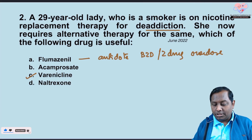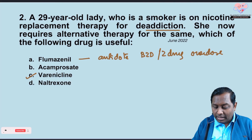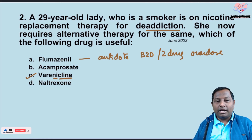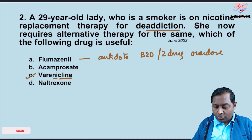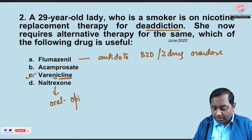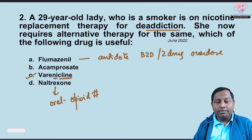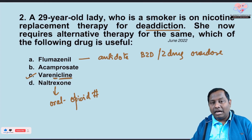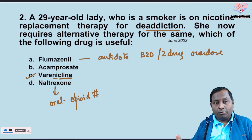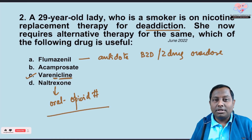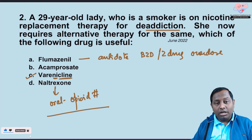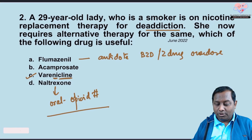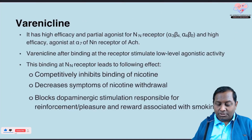Varenicline is the best drug for nicotine de-addiction. Naltrexone is an orally effective opioid receptor antagonist, used in maintenance therapy after opioid addiction to prevent relapse. Acamprosate is used in alcohol de-addiction and also decreases craving in alcoholic patients.